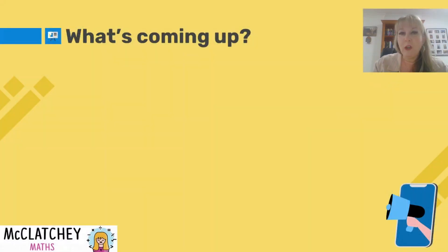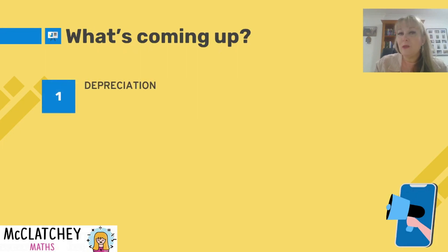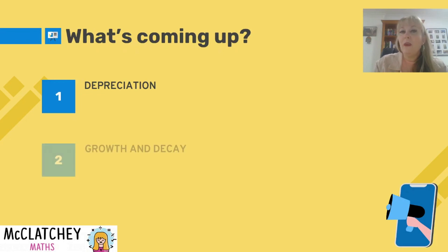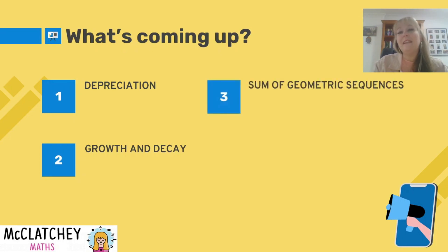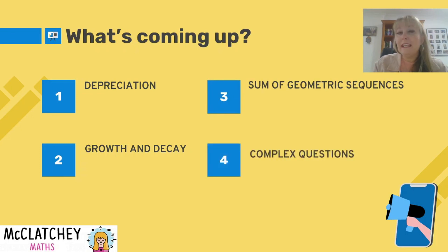Coming up next on McClutchy Maths: we'll look at depreciation in a geometric sequences context — specifically the reducing balance method, having already covered straight-line depreciation with arithmetic sequences. Then we'll move on to growth and decay worked examples, particularly in the context of population, followed by geometric sequences topics for methods students in grade 11, and finally complex questions from past exams.